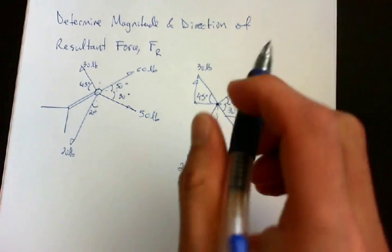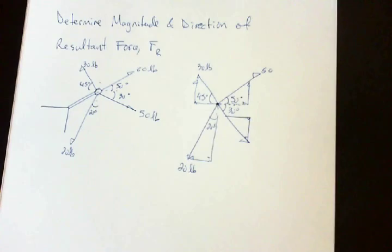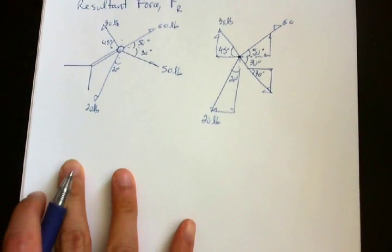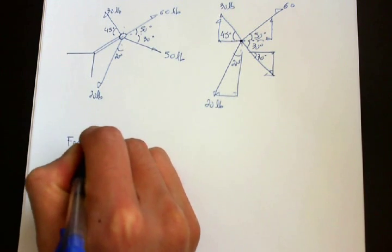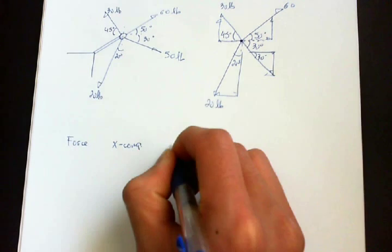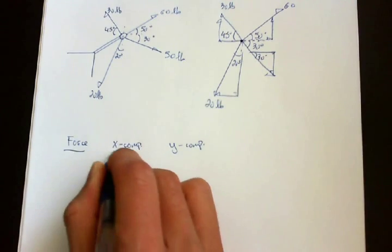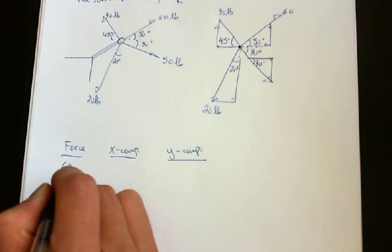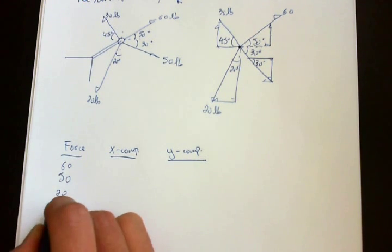Okay, so now the next step is to find out the magnitude of each component. So first, we draw a table. So you've got your force, its x-component, and its y-component. So it's 60 pounds, 50 pounds, 20 pounds, and 30 pounds.